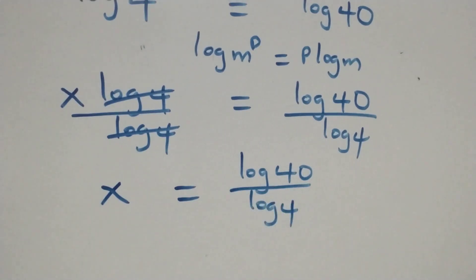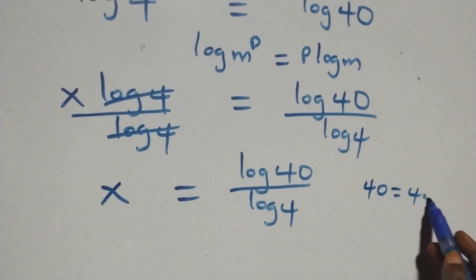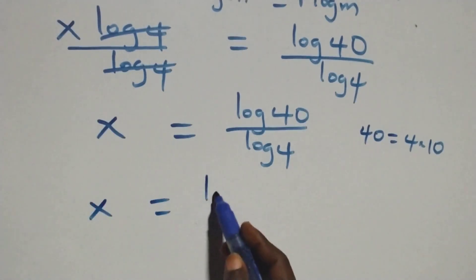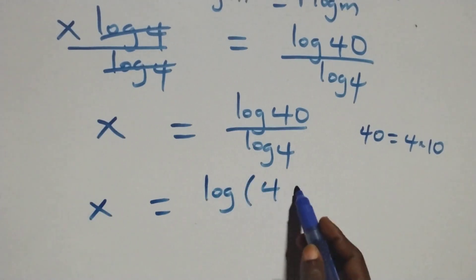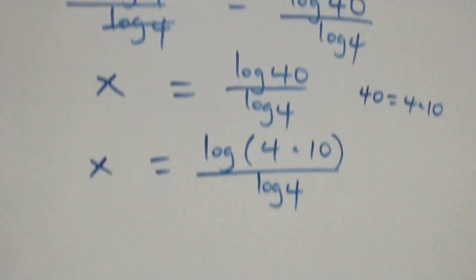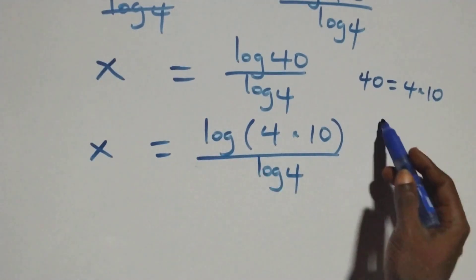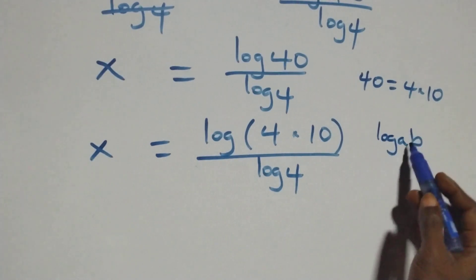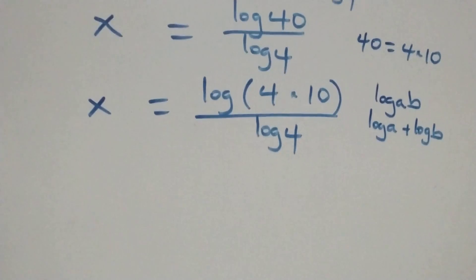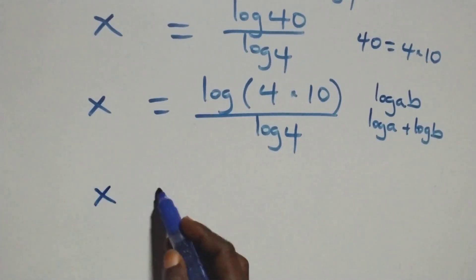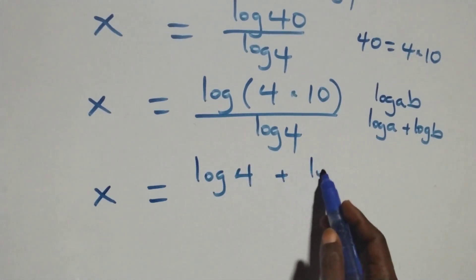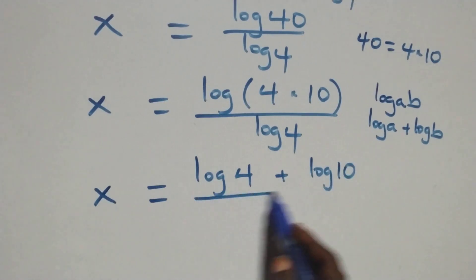The next step: we express 40 as 4 times 10. Which implies all we have becomes x equals to log(4 times 10) over log 4. This follows from the log product rule — when we have log(a times b), this is the same thing as log a plus log b. So what we have becomes x equals to (log 4 plus log 10) over log 4.